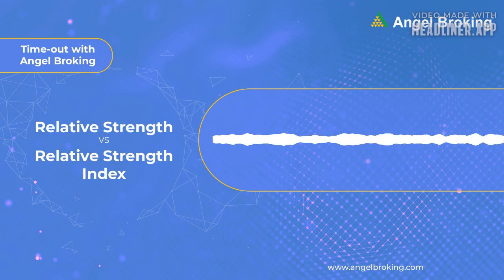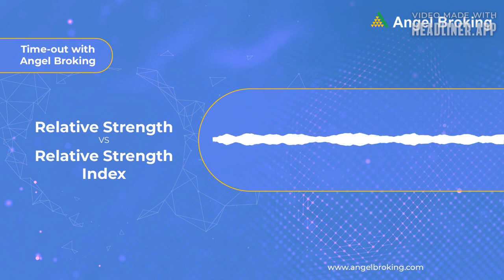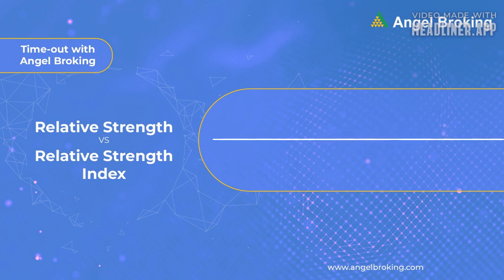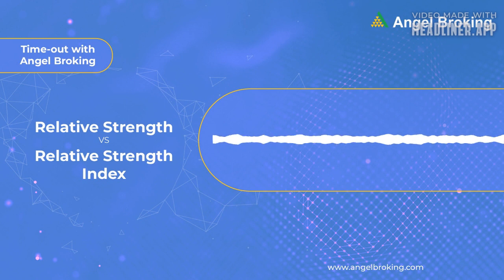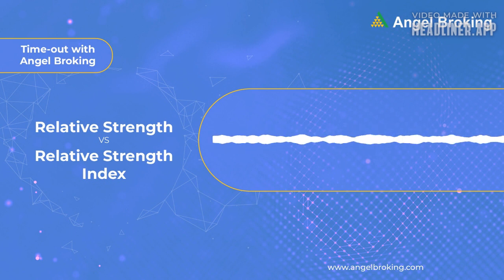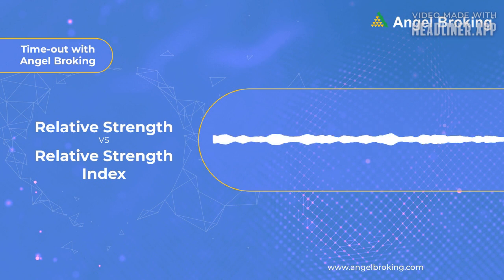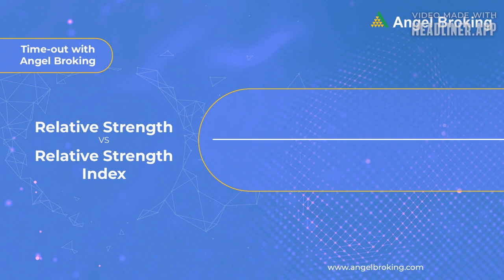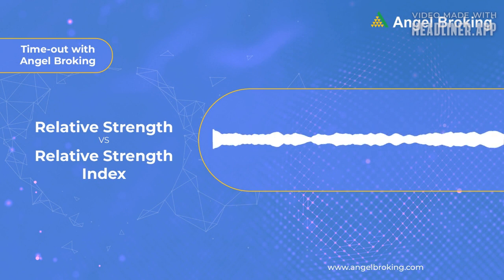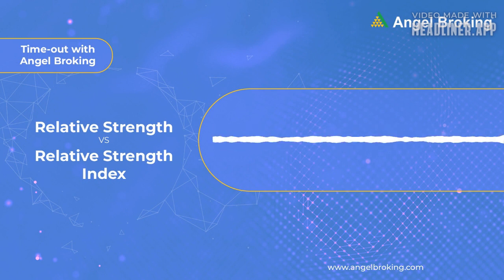So while RS can help you understand if one security is performing better than another, RSI tells you when a security's price is climbing or falling due to it being overbought or oversold. Another thing to look for when using RSI is to identify and adjust the overbought and oversold levels when the conventional levels fail to capture trend reversals. When using RSI to spot trend reversals, it is crucial to understand that the signals it produces are reliable only when they conform with the long-term trends. Moreover, if you are having difficulty resolving false alarms from real signals, it is best to look for confirmation rather than hoping for expected movement.